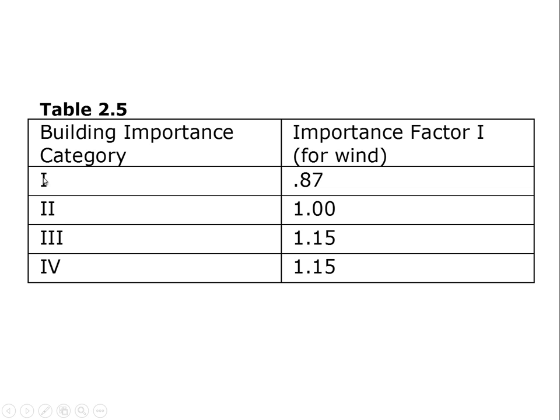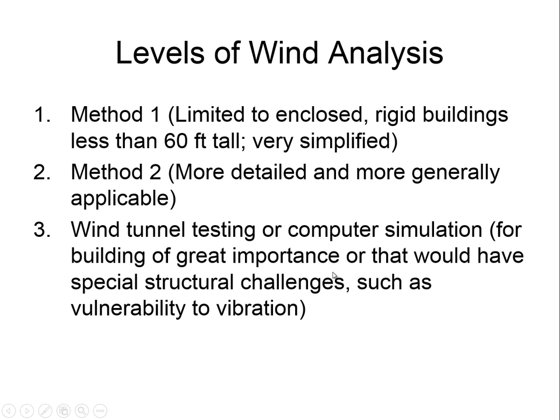So there's a category two for ordinary buildings, and categories three and four for buildings of special importance — like buildings where large numbers of people could die in one event, or buildings of vital importance like hospitals and police stations. We throw in an extra margin of safety for those. We can talk about levels of wind load analysis — you're not going to worry as much about wind load on a tobacco barn as on a 2,000-foot tall high-rise building. So we have different degrees of thoroughness.